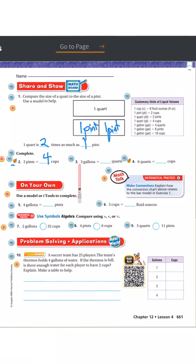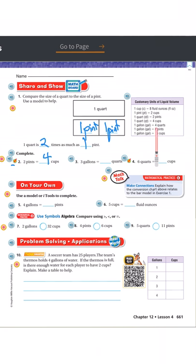Number three: we have three gallons — how many quarts? First, how many quarts are in one gallon? One gallon has four quarts. So for three gallons, we do three times four, giving us 12 quarts.